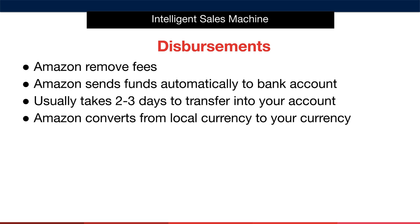At any stage, you can check on what the current balance of your disbursement is by going into the Reports section from the main menu inside your Seller Central account. Then select the sub-menu option of Payment. You will also get a snapshot of the current balances at the top of Area 3 to the right of the Home page.